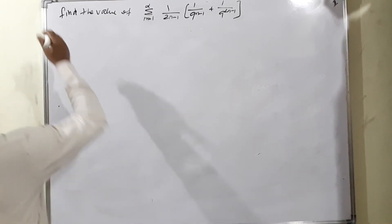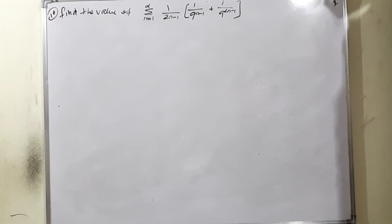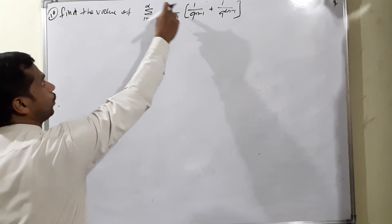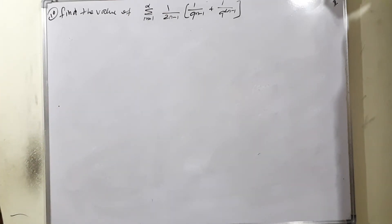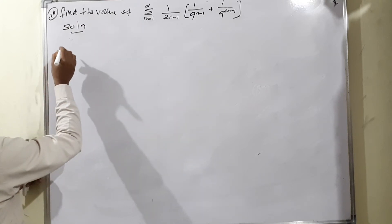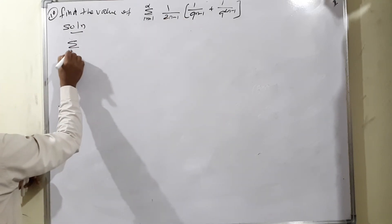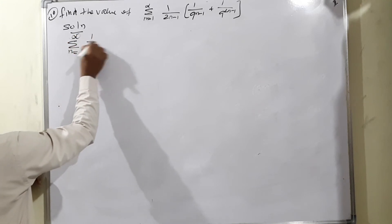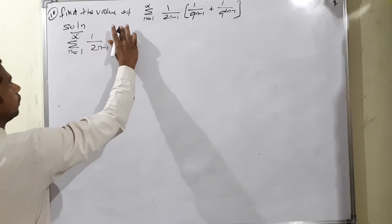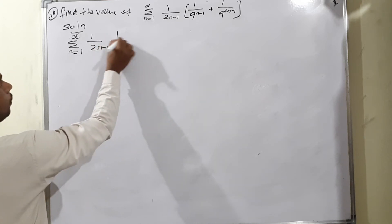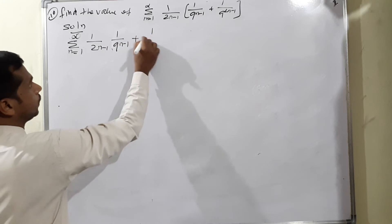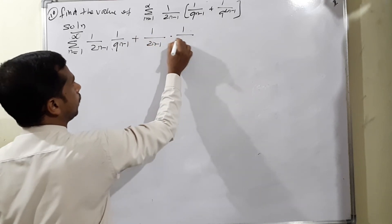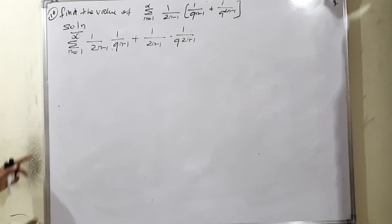Question 10 from Exercise 5.4: Find the value of summation from n=1 to infinity of (1/(2n−1)) × [1/9^(n−1) + 1/9^(2n−1)]. Solution: Removing the bracket, this becomes summation of (1/(2n−1)) × 1/9^(n−1) plus summation of (1/(2n−1)) × 1/9^(2n−1).